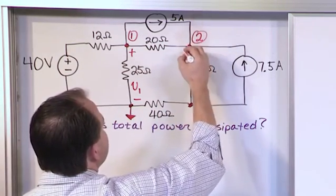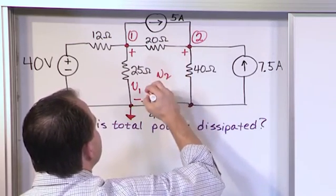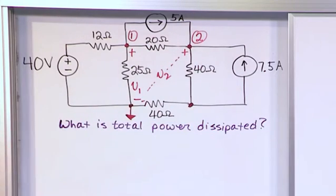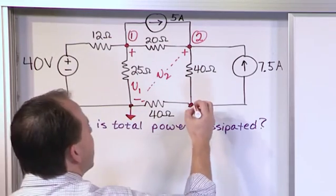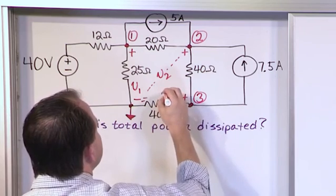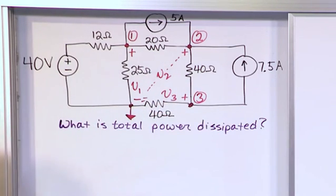I'm going to call this guy node 2, plus minus V sub 2, and you kind of have to use your imagination that it's catty corner, measured with respect to our common reference point here. And then I'm going to call this guy node number 3, plus minus V sub 3. So it clutters up the drawing a little bit.